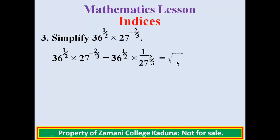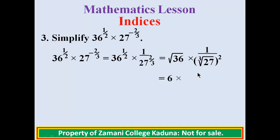We take the square root of 36, since the denominator 2 indicates a square root. Then times 1 over: the denominator 3 means we take the cube root of 27 raised to the power of 2. The square root of 36 is 6. The cube root of 27 is 3, raised to the power of 2 gives 9. So we have 6 over 9. Since 3 divides both 6 and 9, our answer is 2 over 3.